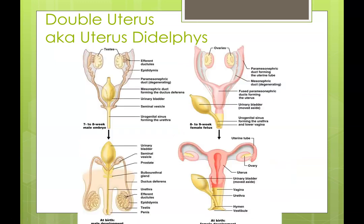This image shows the different duct systems between males and females. In a female, without signals to secrete testosterone, the paramesonephric duct develops and turns into the uterine tube, with the ducts fusing together to form the uterus. In a male, if testosterone is secreted, that paramesonephric duct degenerates, and instead the mesonephric duct develops to create the vas deferens or ductus deferens, the epididymis, and efferent ductules that communicate with the testes.